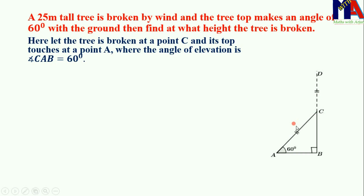Here is your figure description. Here the tree is broken at point C and its top touches at point A, where the angle of elevation is angle CAB equal to 60 degrees. Height of tree is AC plus CB equal to 25 meters.